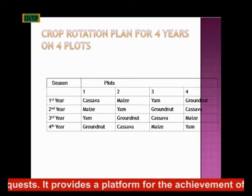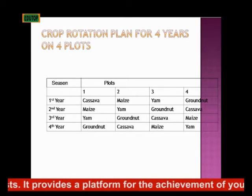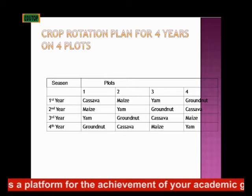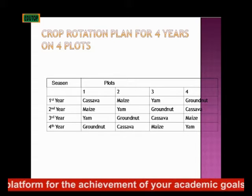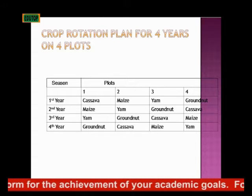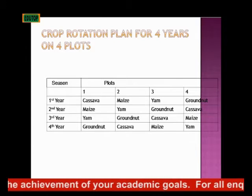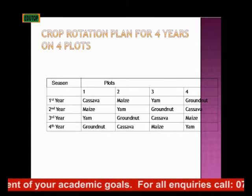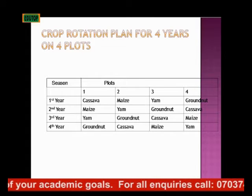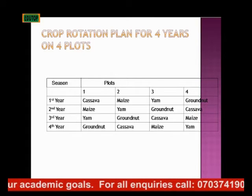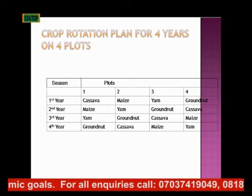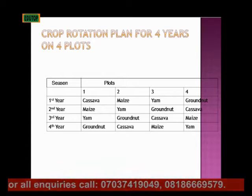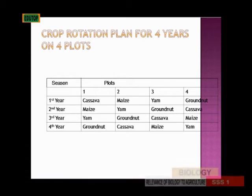In the first year, you plant cassava on Plot 1, maize on Plot 2, yam on Plot 3, then groundnut on the fourth plot. Then in the second year, you plant maize in your first plot, yam now in the second plot, groundnut in the third plot, then cassava on the next plot.